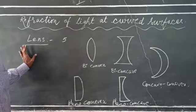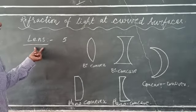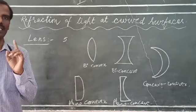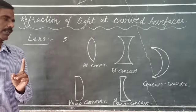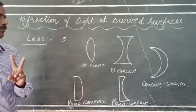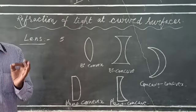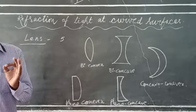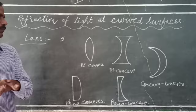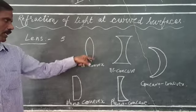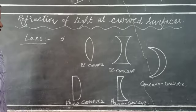Again, a lens is a transparent material bounded by two surfaces of which either one or two of the surfaces are curved surfaces.